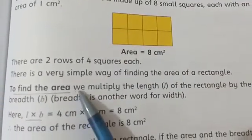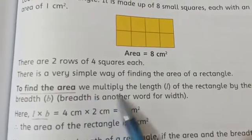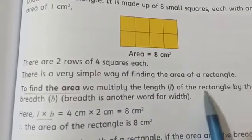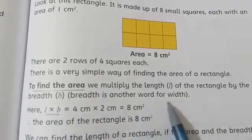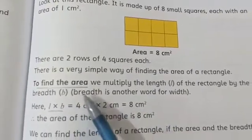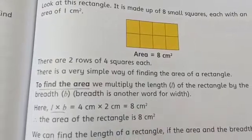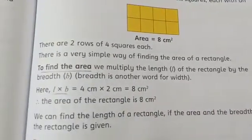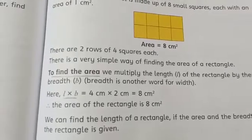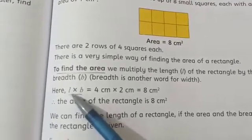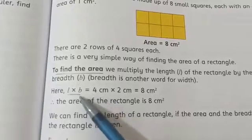To find the area, we multiply the length of the rectangle by the breadth. Breadth is another word for width. We use width and breadth. It has the same meaning. So we can simply find out the area of a rectangle by using formula. And the formula is length into breadth. Length multiplied by breadth.